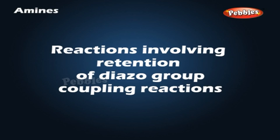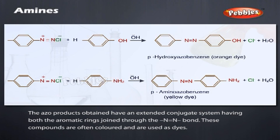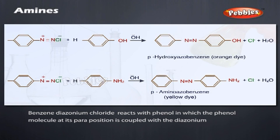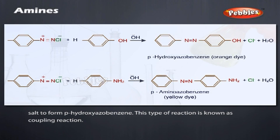Coupling Reactions: The diazo products obtained have an extended conjugate system having both aromatic rings joined through the N=N bond. These compounds are often colored and are used as dyes. Benzene diazonium chloride reacts with phenol, in which the phenol molecule at its para position is coupled with the diazonium salt to form p-hydroxyazobenzene. This type of reaction is known as a coupling reaction.